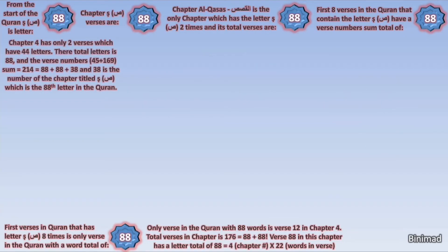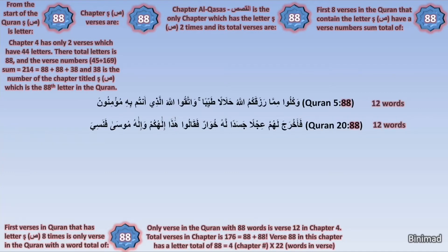In chapter 4, it was verse 12 that had 88 words — so can we see the number 12 manifest elsewhere in this code? We realize that verse 88 in chapter Al-Ma'idah and verse 88 in chapter Taha both have 12 words each. This connection makes us look at them even closer, and we realize that the total number of letters in these two verses is 100, which is 88 plus 12. This is truly an astonishing code, but we are still just warming up.